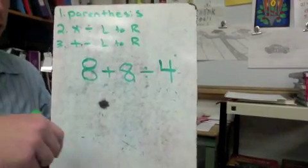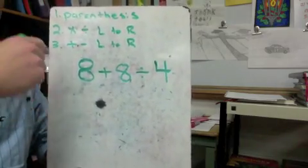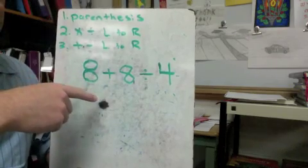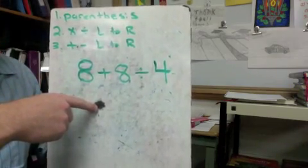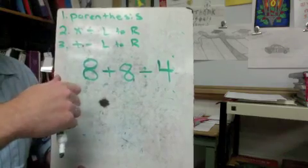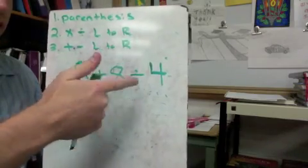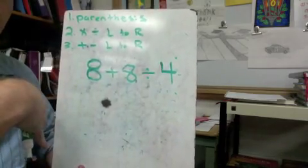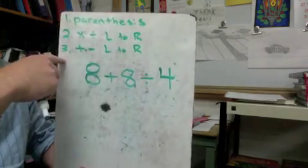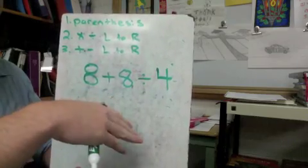We're going to start real simple: eight plus eight divided by four. A lot of people — I gave this to about three or four people the other day — and their initial thought was always the wrong answer. A lot of people want to do eight plus eight is sixteen, then divide by four and get four. That's not going to be your answer. Let's go through the order of operations. Parentheses is first — we don't have any, so we can skip that part.